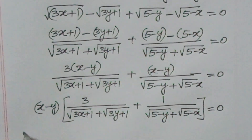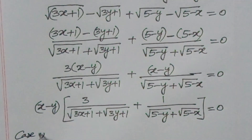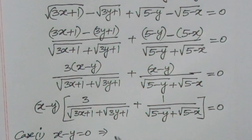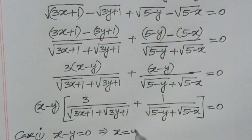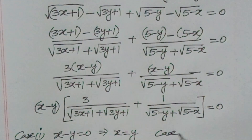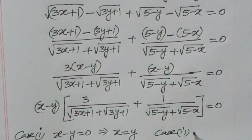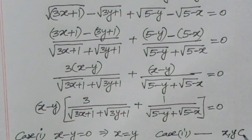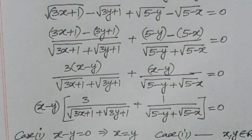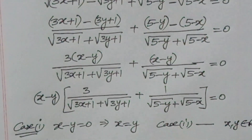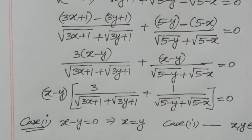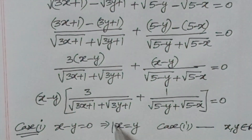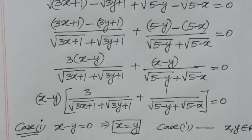From this we get Case 1: x - y = 0, which implies x = y. Case 2 would give some value, but since x and y belong to the real numbers, we take only Case 1, so x = y.